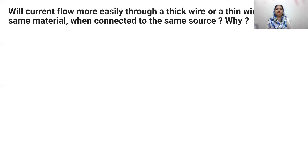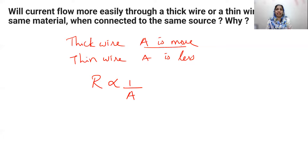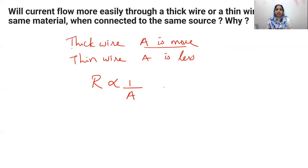Will current flow more easily through a thick wire or a thin wire of the same material? A thick wire has a larger area of cross-section, while a thin wire has a smaller area of cross-section. Since resistance is inversely proportional to area, a thick wire has less resistance. Therefore, resistance is less for a thick wire.